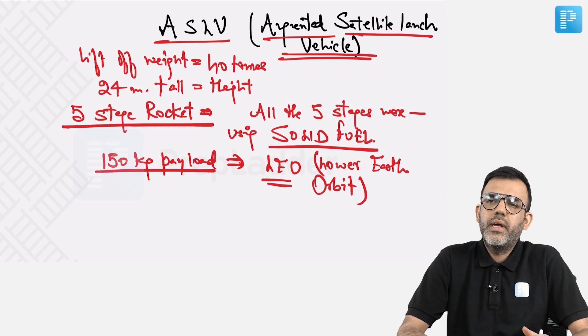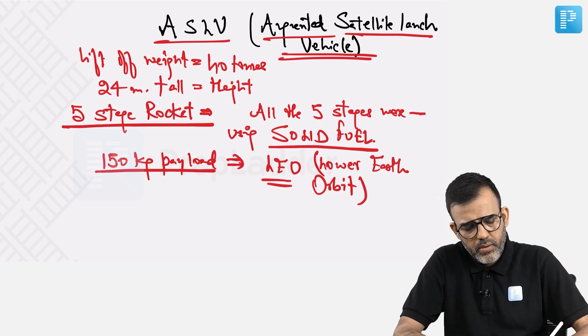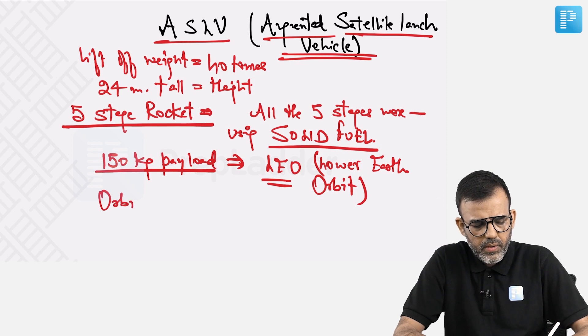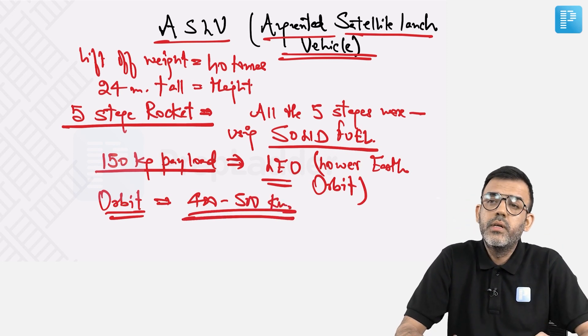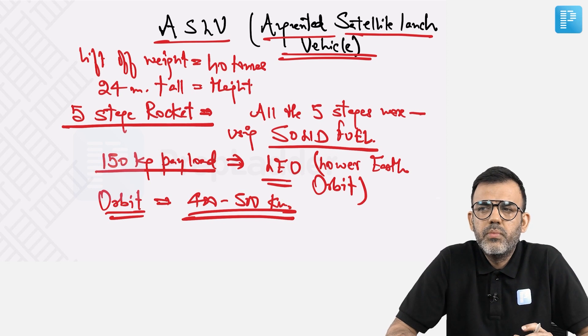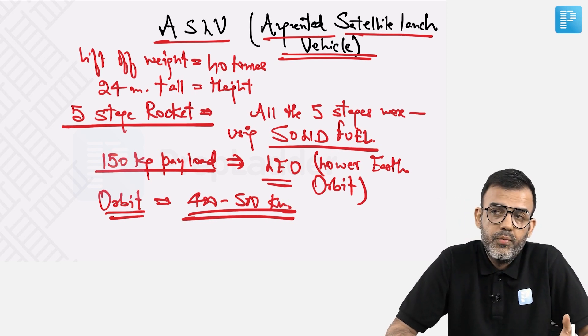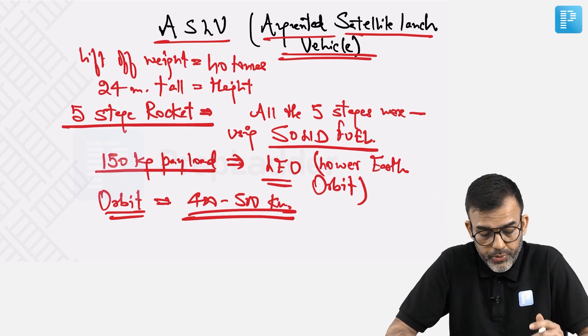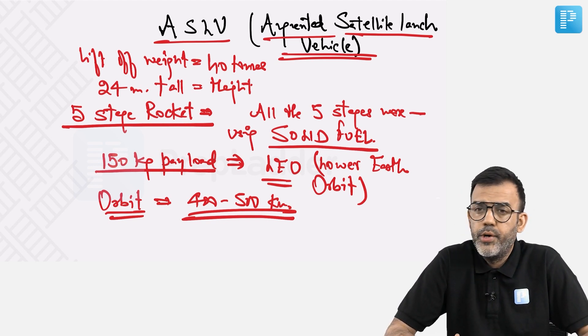In this 400 to 500 kilometer high orbit, orbit at around 400 to 500 kilometers from surface of earth, you were able to put a 150 kilogram satellite in such low earth orbit. That is all ASLV was able to produce, and it was not considered a great success, which I have already told.